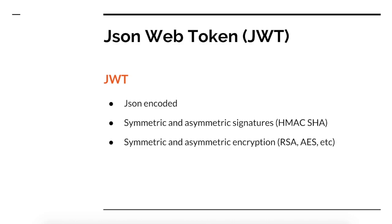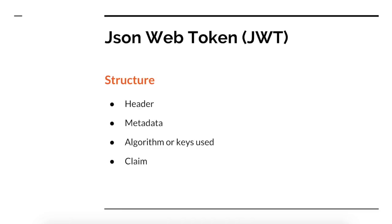JSON Web Token now serves as a base for almost everything you use to secure a web service. It serves as a base for OAuth 2.0, it serves as a base for OpenID, and it is now a base for all authentication nowadays. The structure of the JSON Web Token is as follows: it has header information — metadata that informs about the algorithm of the signature used — and then the claim object.